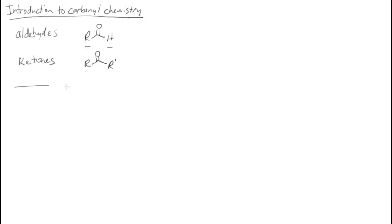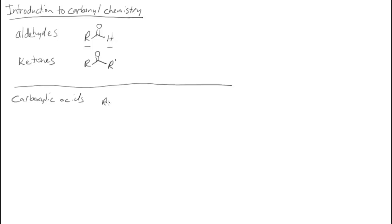So that will define one of our categories — I'll talk about what the categories actually are later on. In the second set of categories, we have carboxylic acids. We have an R group on one side of our carbonyl and OH on the other side — that's what defines a carboxylic acid.